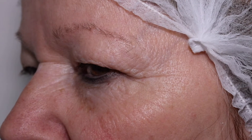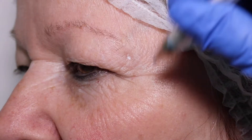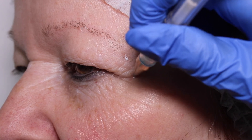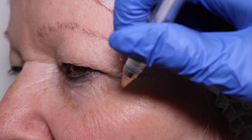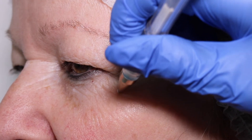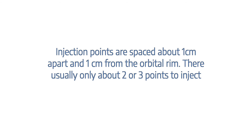Ask the patient to smile and mark the areas to be treated. Injection points are spaced about one centimetre apart and one centimetre from the orbital rim. There are usually only about two or three points to inject.